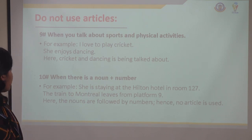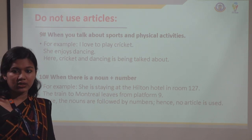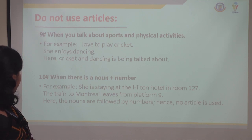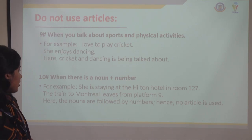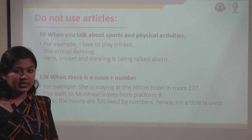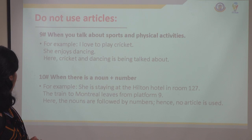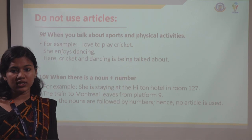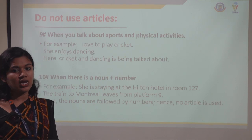When talking about sports or physical activities, you don't have to use any articles. For example: 'I play cricket', 'I play badminton.' Also, when there is a noun plus number combination, you don't have to use an article. For example: 'She is staying in room number 127' or 'The train to Montreal leaves from platform 9.' Platform is a noun and 9 is a number, so no article is needed.